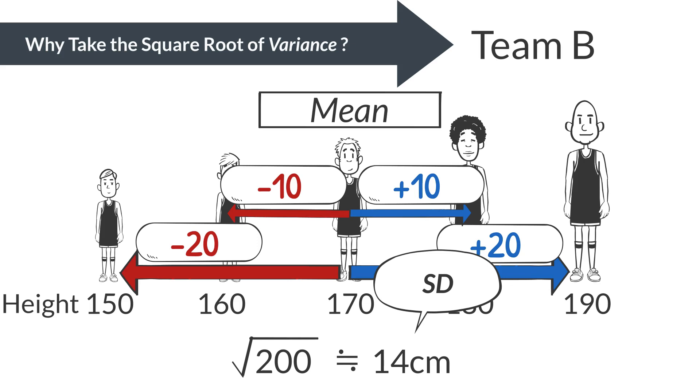This brings the units in line with the original data. When summarizing this basketball team data, it's easier to grasp if we say the mean height is 170 cm with a standard deviation of 14 cm, rather than bringing up the variance in square centimeters. This is one advantage of using standard deviation.